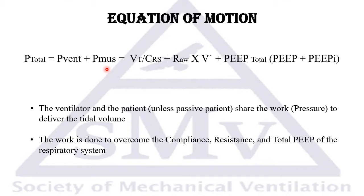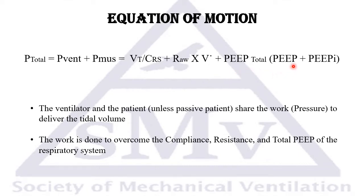To overcome the obstacles of delivering the tidal volume, you have to overcome the compliance or elastance — expressed as tidal volume over the compliance of the respiratory system — plus the airway resistance multiplied by the flow, and the total PEEP, whether it's the applied PEEP plus intrinsic PEEP.